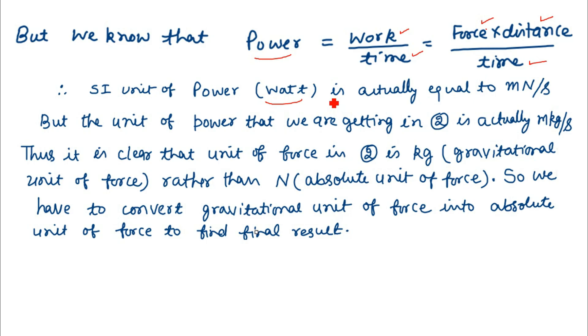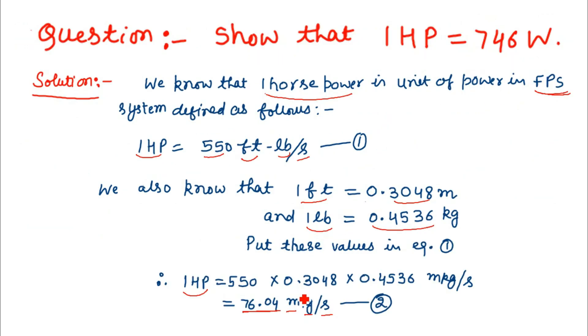We will see that 1 watt equals 1 meter times newton divided by second. However, in equation 2, we are getting meter in place of meter and second in place of second, but instead of newton, the unit of force is kilogram.